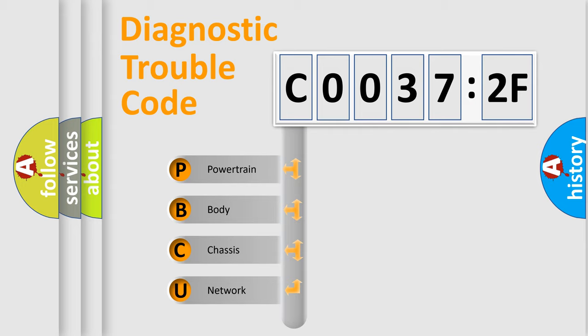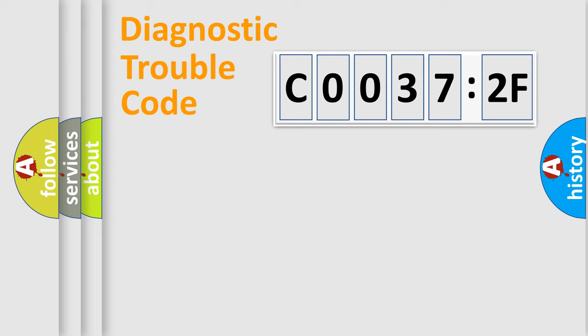We divide the electric system of automobile into four basic units: Powertrain, Body, Chassis, and Network.